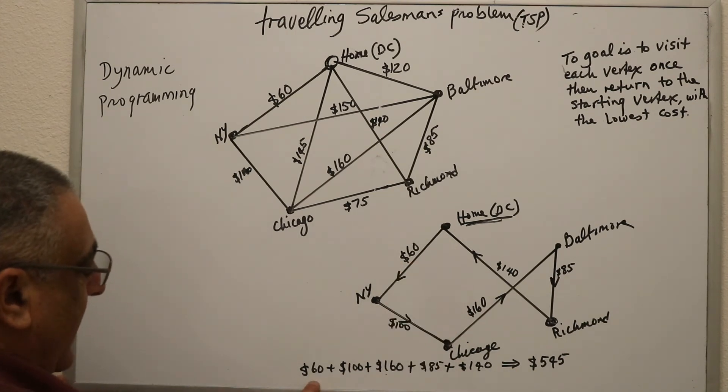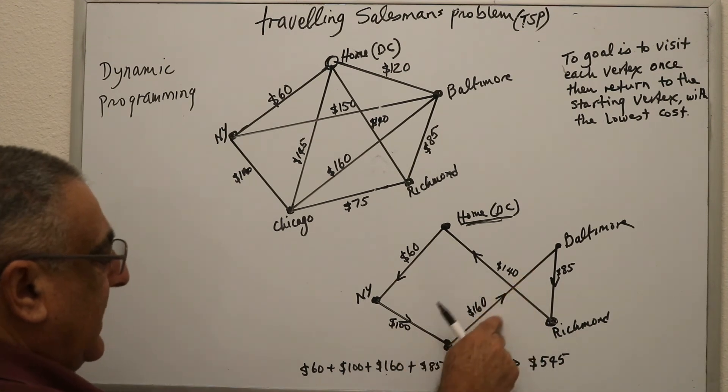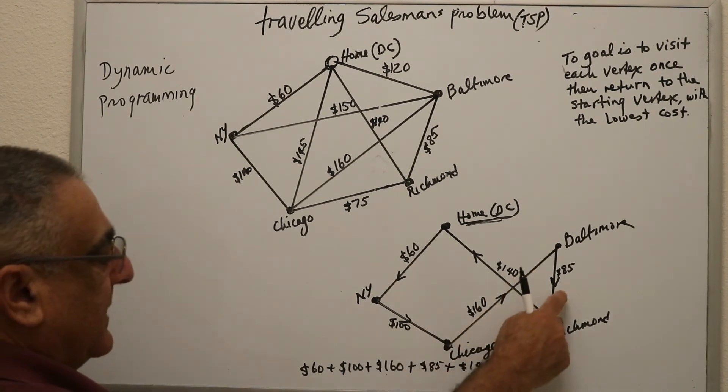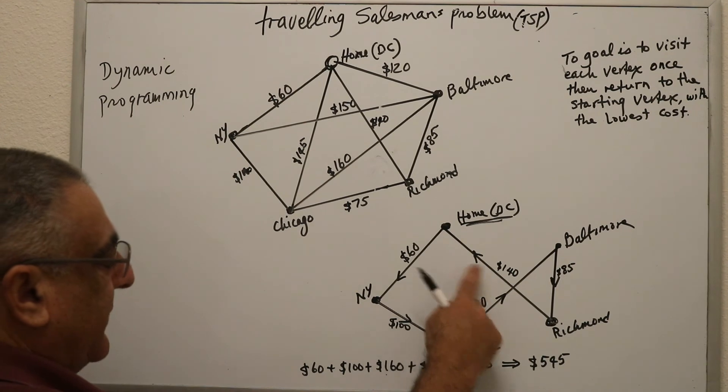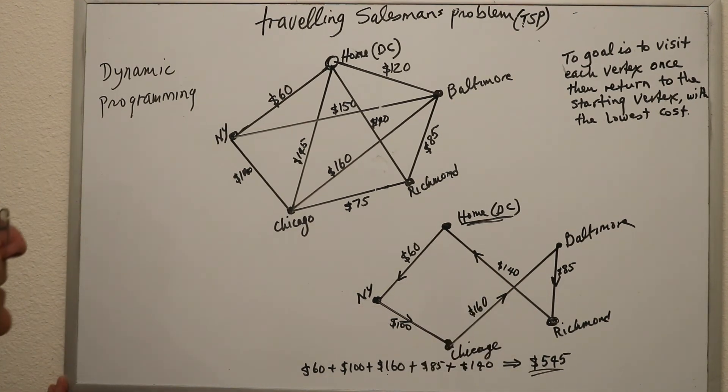So if I add these up I get sixty plus a hundred plus one sixty plus eighty five. So sixty plus hundred plus one sixty plus eighty five plus one forty. That gives me a total of five fifty four.